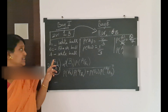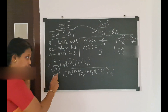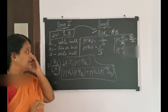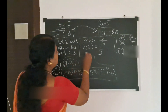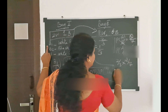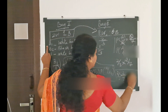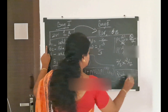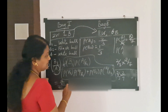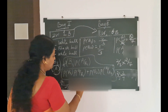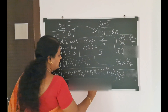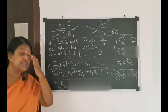Now apply Bayes' theorem. The answer is P(B1|A) = P(B1) × P(A|B1) divided by [P(B1) × P(A|B1) + P(B2) × P(A|B2)]. That is (2/3 × 2/7) divided by (2/3 × 2/7 + 1/3 × 6/7), which equals 4/21 divided by (4/21 + 6/21), equal to 4/10. So the answer is 0.4.